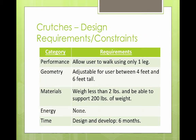Let's take a look at an example. If I'm designing a new set of crutches, I might have the following requirements and constraints — note that not all categories are applicable for this type of design. Performance: crutches should allow a user to walk on only one leg. Geometry: should be adjustable for a user between four feet and six feet tall. Materials: should weigh less than two pounds and be able to support 200 pounds of weight — notice that these include numbers we can test during prototyping. There are no requirements on energy beyond what the person using the crutches provides.